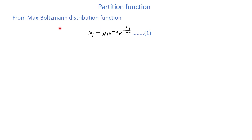We start with the Maxwell-Boltzmann distribution function: nj is equal to gj times e to the power minus alpha, times e to the power minus ej divided by kT. Let this be equation number one.